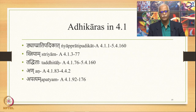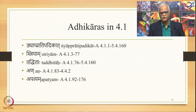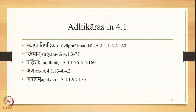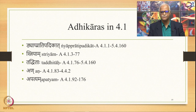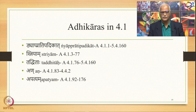Next we go to 4.1. Here we have some important Adhikaras. For example, Nya Prati Vadikata from 4.1.1 to 5.4.160 — a huge Adhikara covering two Adhyayas. Striyam from 4.1.3 to 4.1.77: the suffixes stated in the sense of feminine gender are stated in this section. Then there is Taddhitaha from 4.1.76 to 5.4.160 — also a big Adhikara. Taddhitas are the Pratyayas. We have already studied them.